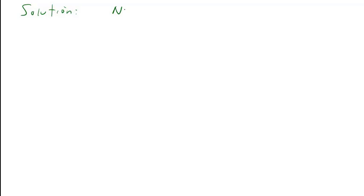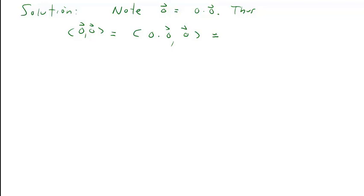The zero vector can always be written as zero times itself — that is, a scalar zero times the zero vector. Thus we can write the inner product of zero with zero as the inner product of zero times zero with zero. By property three, we can pull the scalar zero out in front and write this as zero times the inner product of zero with zero, which equals zero.